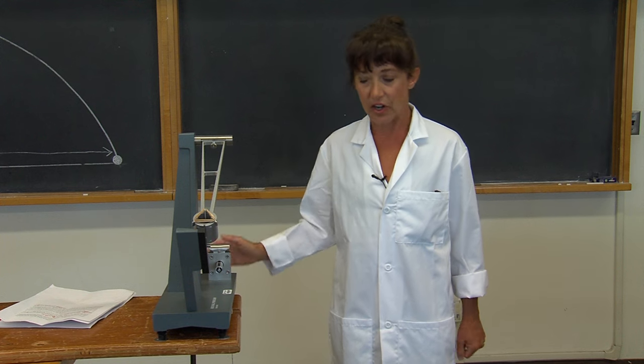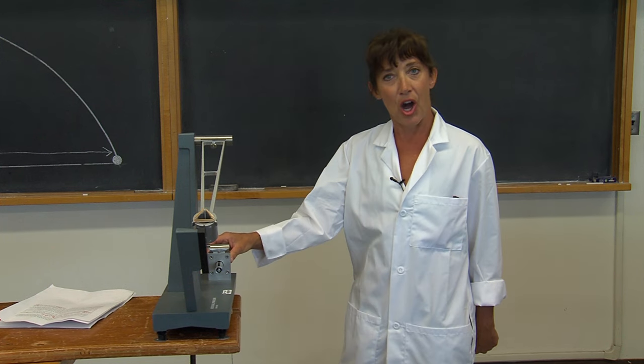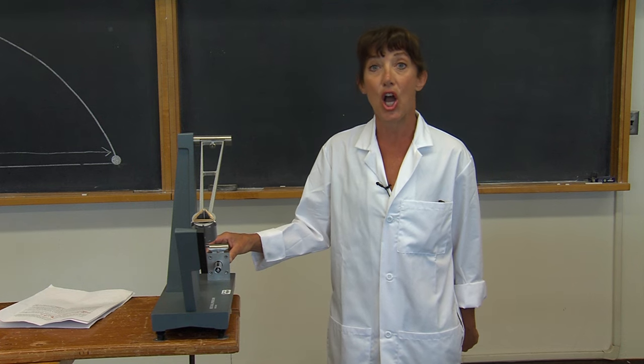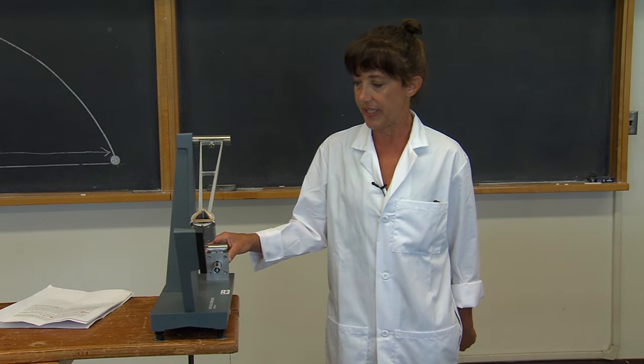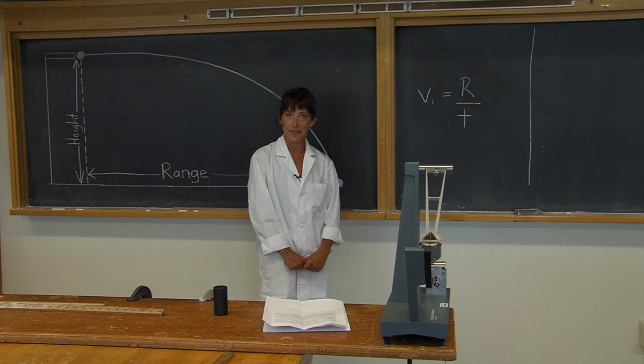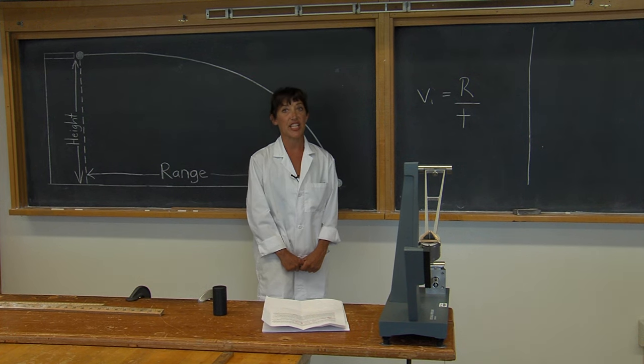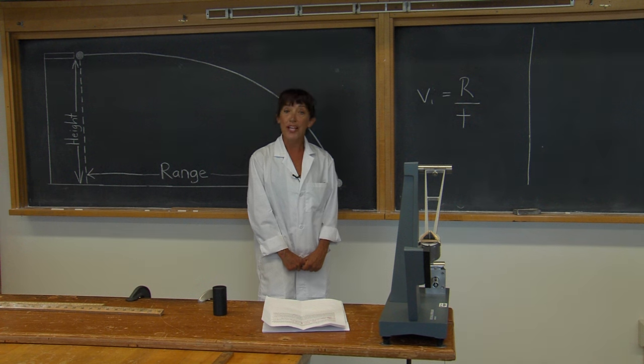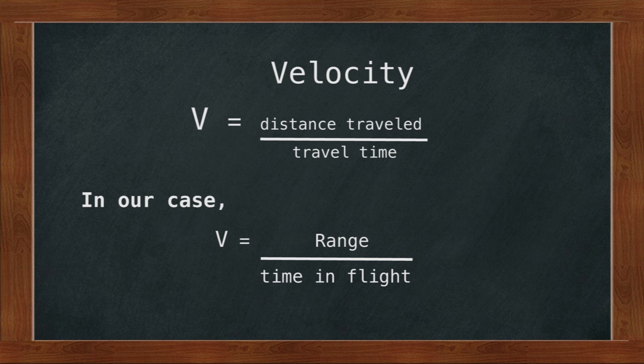And what does this mean for our experiment? This means that upon launch, the projectile's initial velocity only has a horizontal component. We are interested in solving for the projectile's initial velocity, which we have just determined has only a horizontal component. So how do we define velocity? Velocity is simply defined as the distance traveled divided by the time it takes to get there.